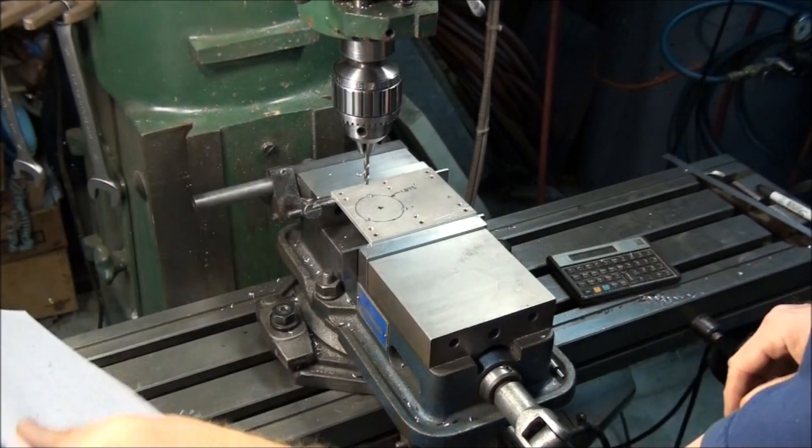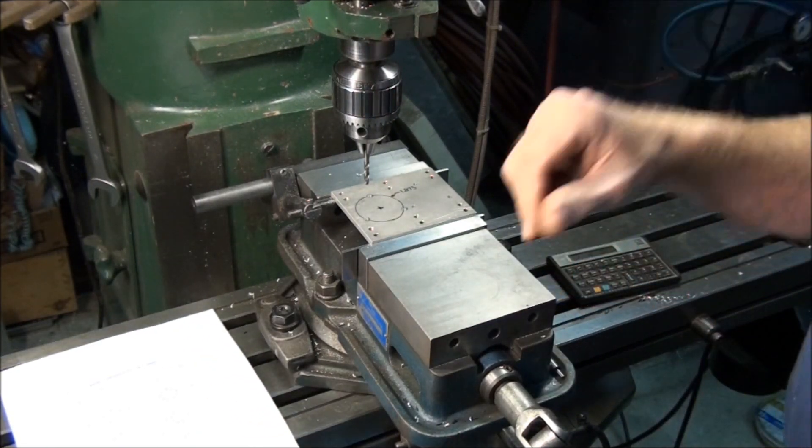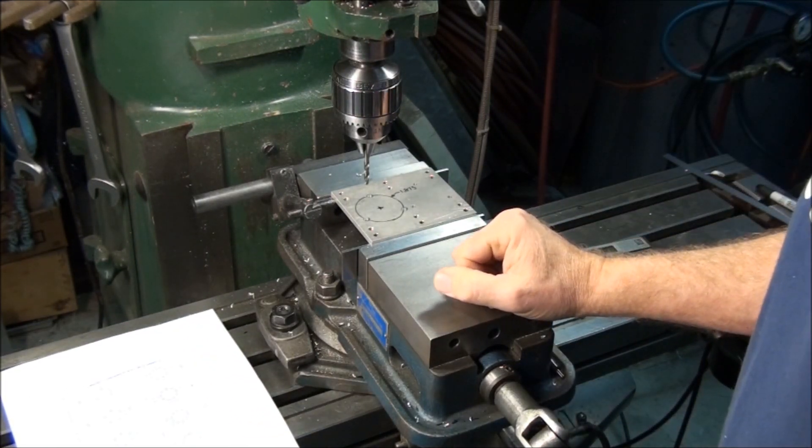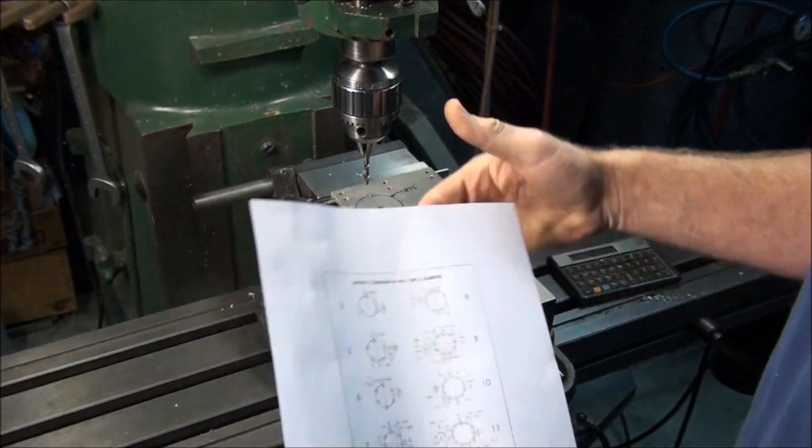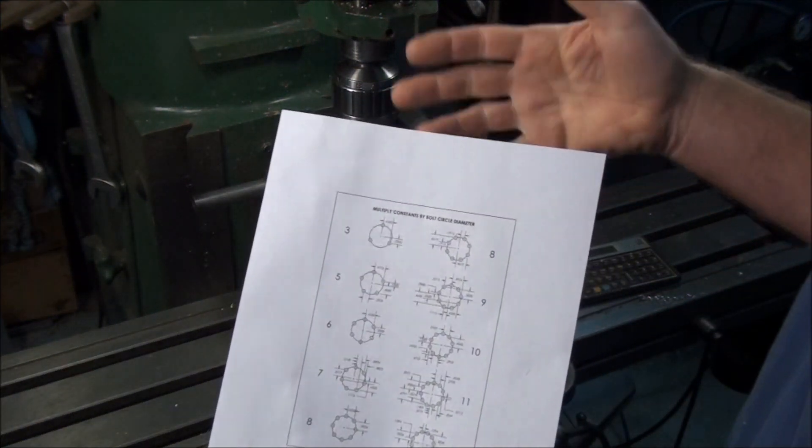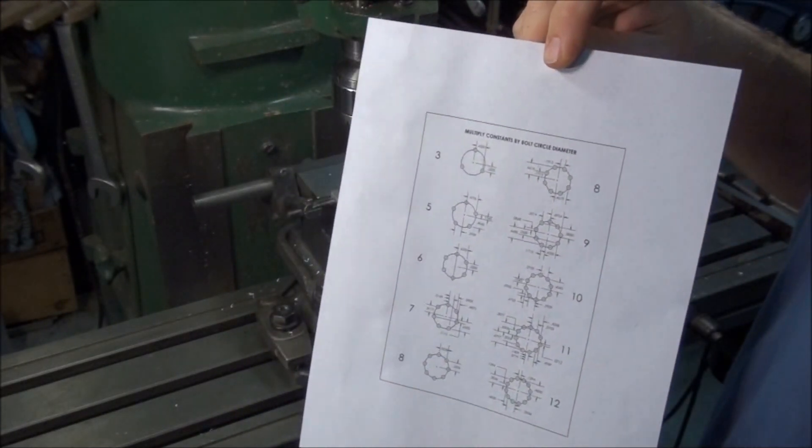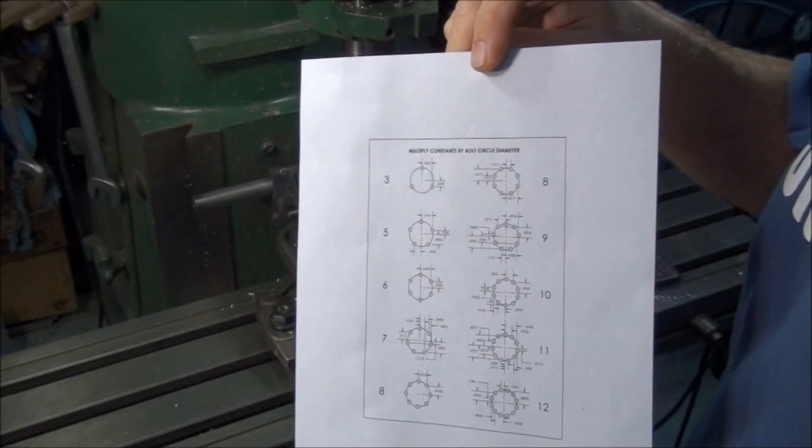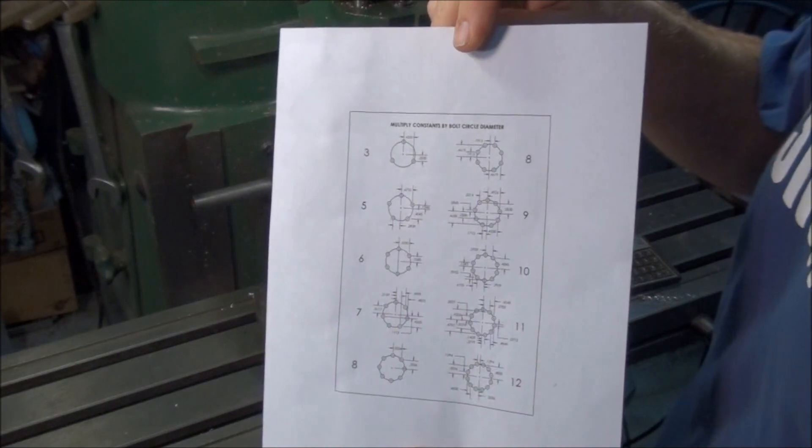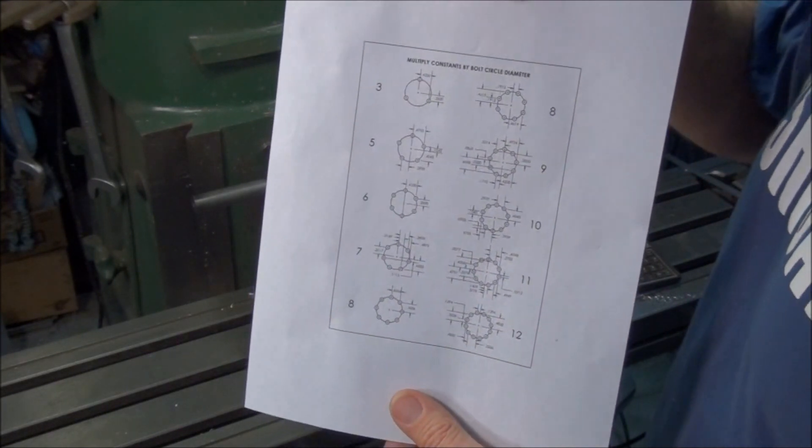So there's our three holes, just like that, we didn't have to set up a rotary table, we didn't have to work it out with trig, we just use this nifty table. This one in particular I just put together myself. I've used several different tables in the past, and each one of them has benefits, so I kind of combined them, and set this one up.